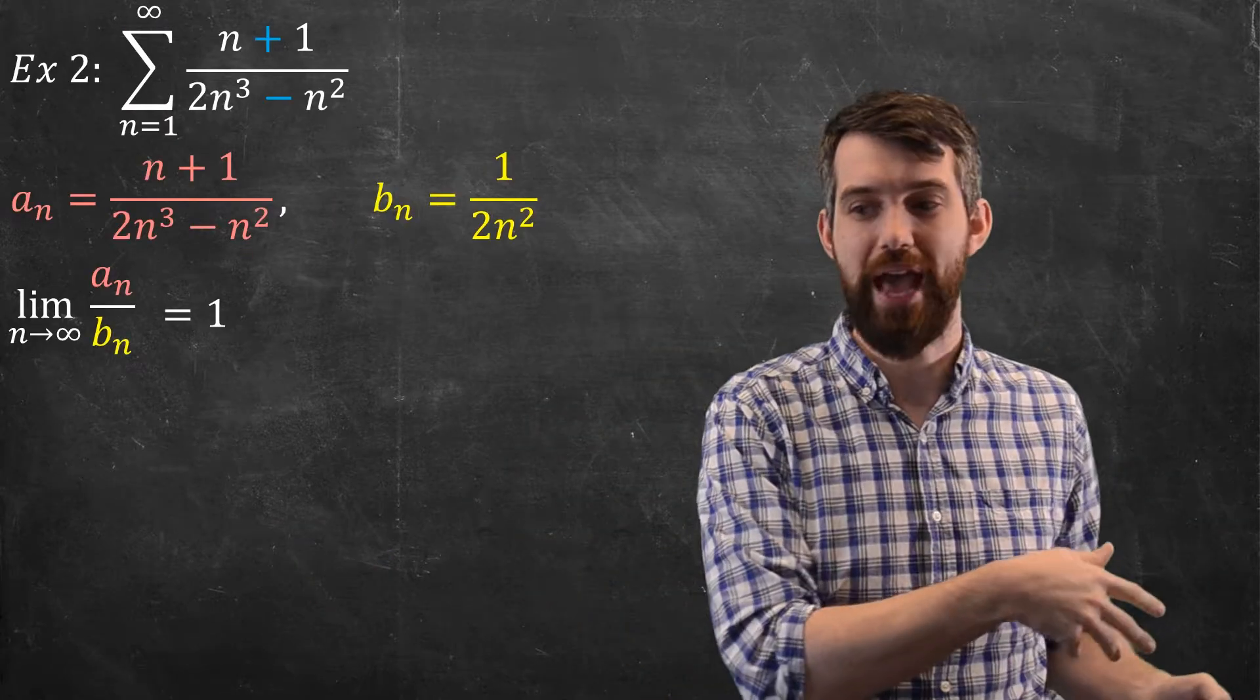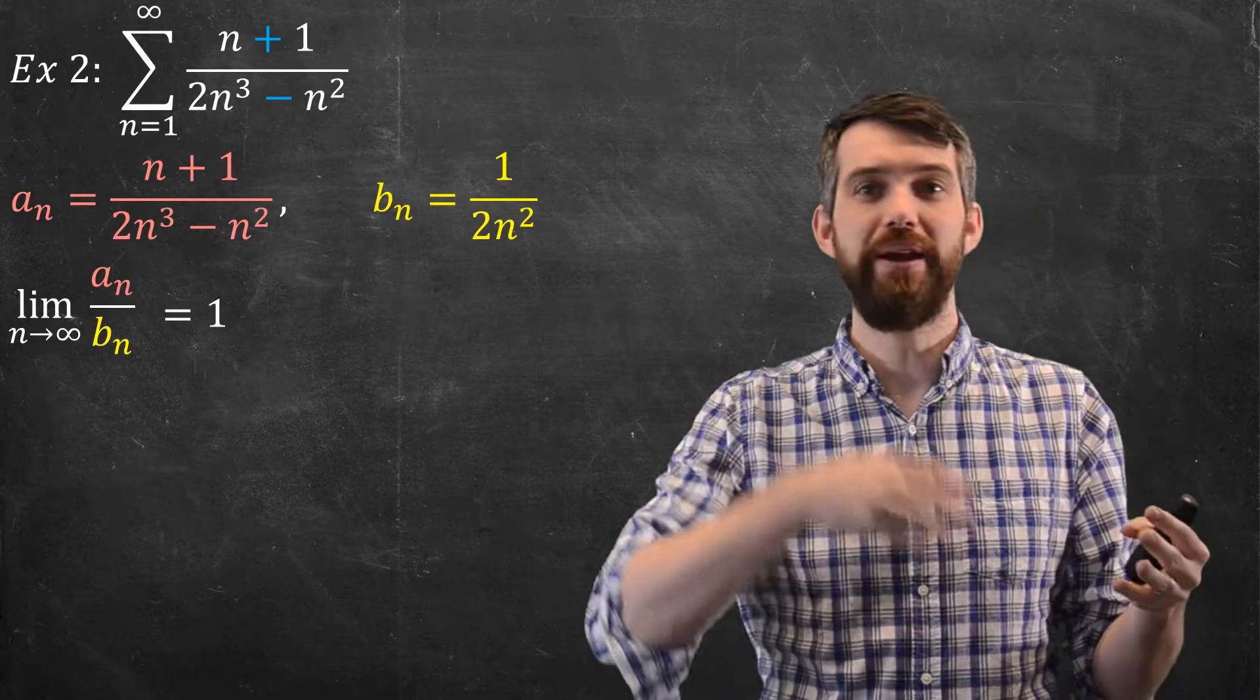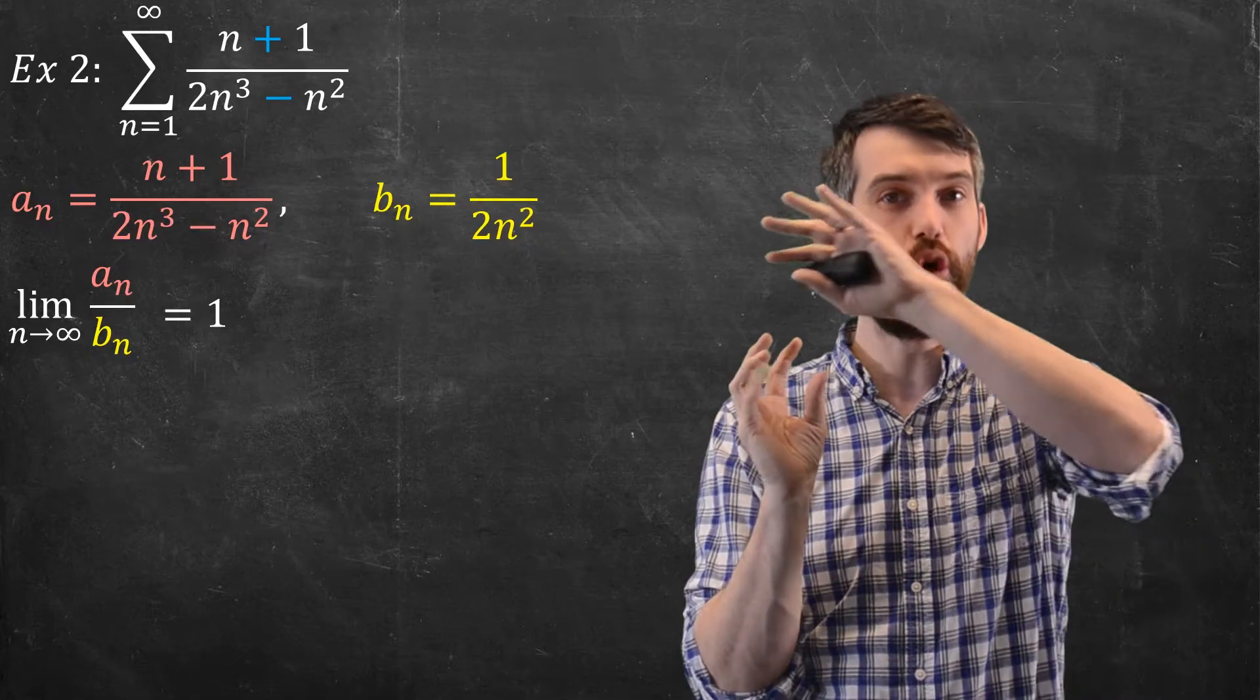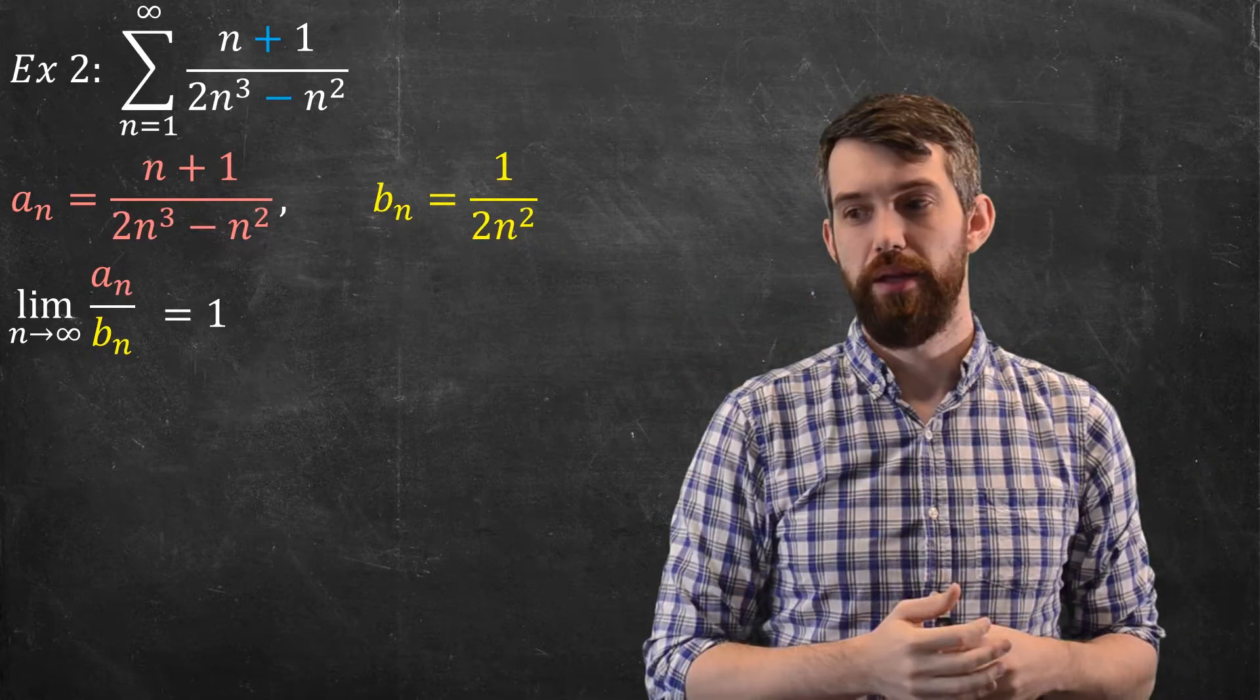Let's return to the example that we have. So where were we? We had this sum, we had this a_n picked out, this b_n picked out, and we knew that the quotient of them was nothing but 1.